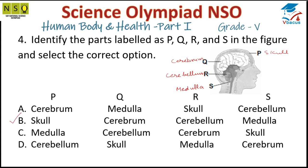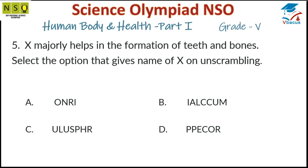Question number five: X majorly helps in the formation of teeth and bones. Select the option that gives the name of X by unscrambling the given word. As we know, calcium helps in the formation of teeth and bones. The scrambled word can be unscrambled to form calcium, so option B is correct.